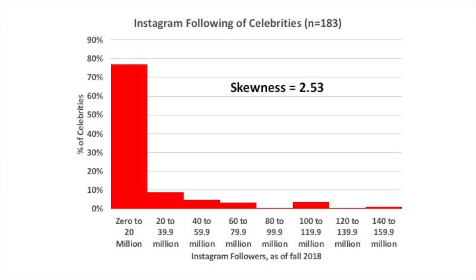The shape is pretty heavily skewed to the right. You see the skewness statistic here of 2.53. Because this histogram is skewed to the right, we use the five-number summary to characterize the center and the spread.